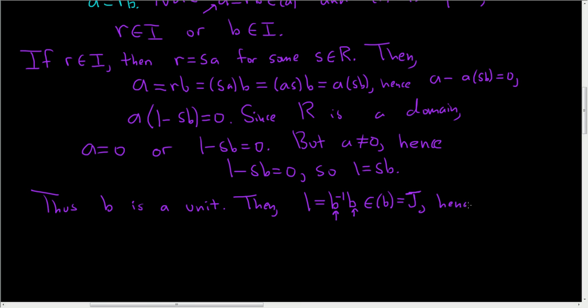Hence, for all r in R, r can be written as r times 1. This is an element in R. This is an element in J. Therefore, because J is an ideal, this is also in J. And so R is a subset of J. But J is a subset of R. Hence, J is equal to R. And I'm showing a lot of detail here on purpose. A lot of this is pretty trivial, perhaps, but hopefully it's helping. So we've taken the first case if r is in I.